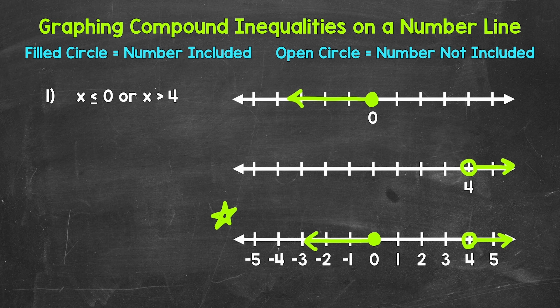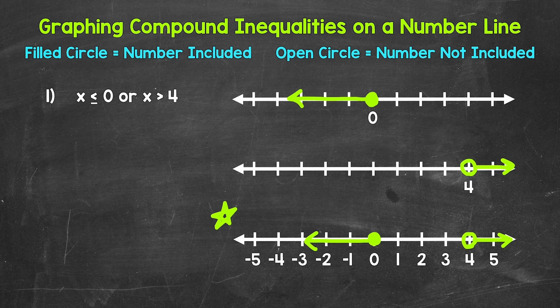As far as solutions, let's try a couple of numbers. Will 2 work for x? Is 2 less than or equal to 0, or greater than 4? No — so 2 is not a solution. How about 7? Is 7 less than or equal to 0, or greater than 4? Yes, 7 is greater than 4, so 7 is a solution. Anything less than or equal to 0, or anything greater than 4 will work, and we can see that represented on the number line.